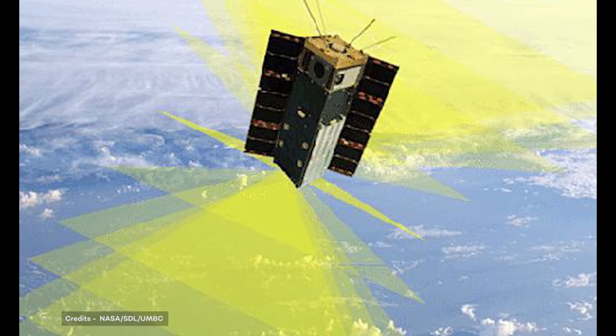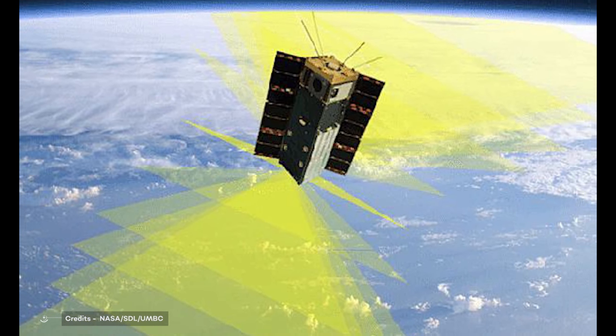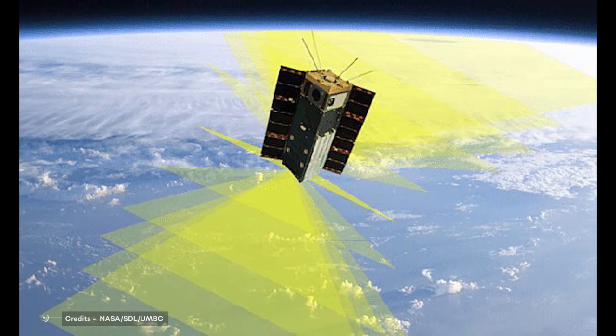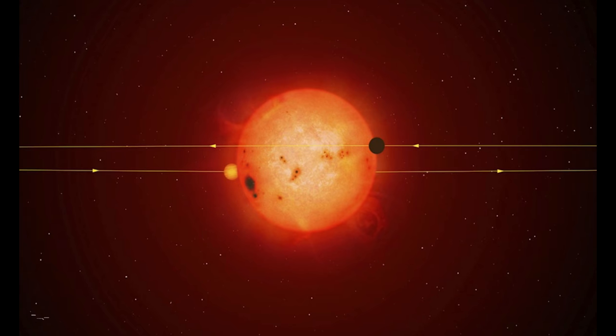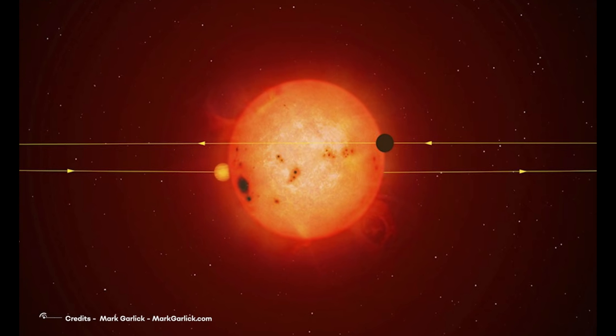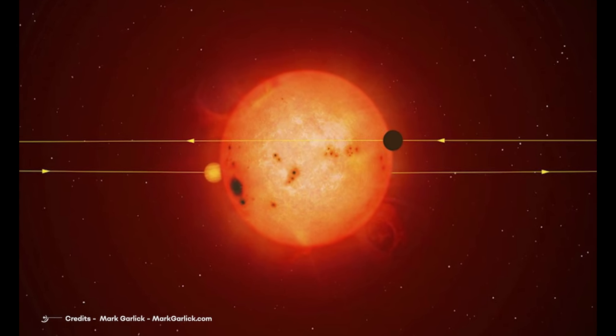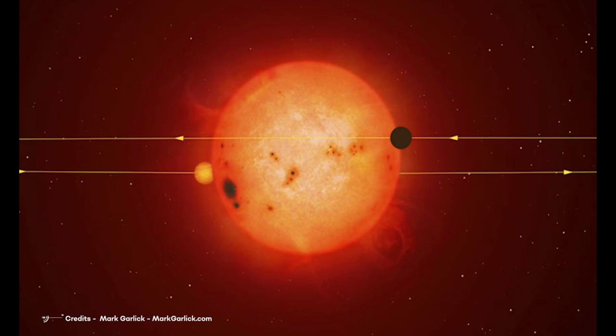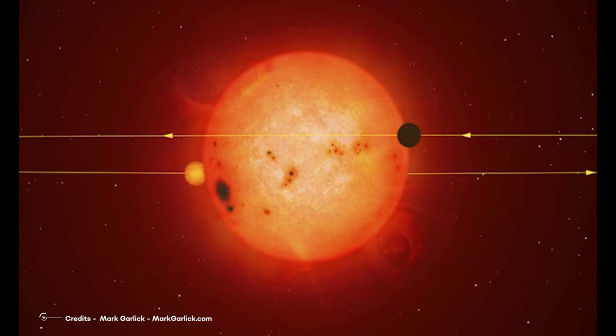HARPS is one of the most successful instruments for detecting exoplanets and holds already several recent records. The detected velocity variations in the case of Gliese 581c are between 2 and 3 meters per second, corresponding to about 9 kilometers per hour.